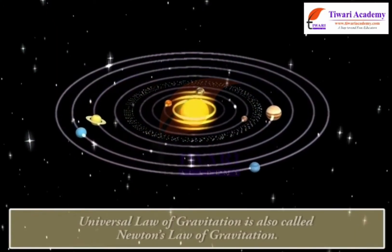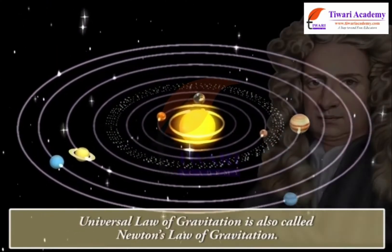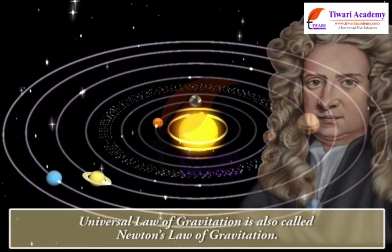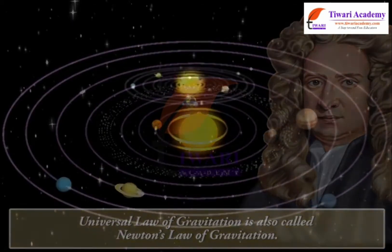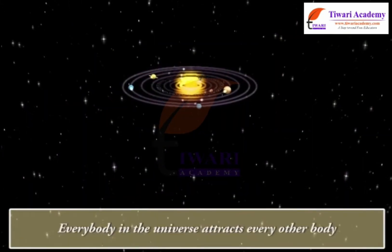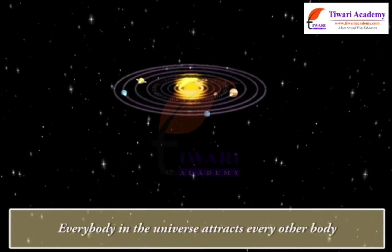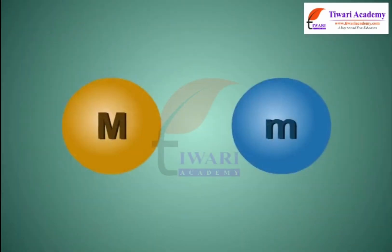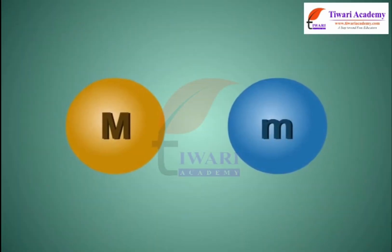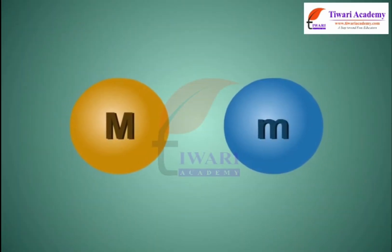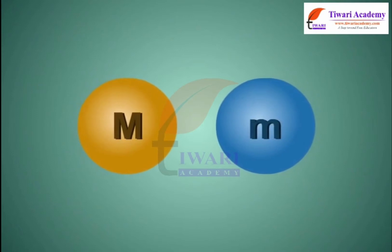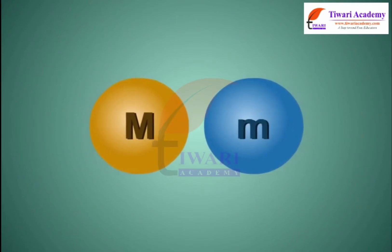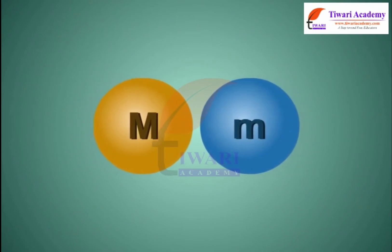The universal law of gravitation is also called Newton's law of gravitation. Every body in the universe attracts every other body with a force which is directly proportional to the product of their masses and inversely proportional to the square of the distance between them.